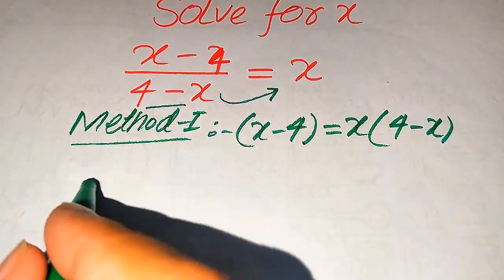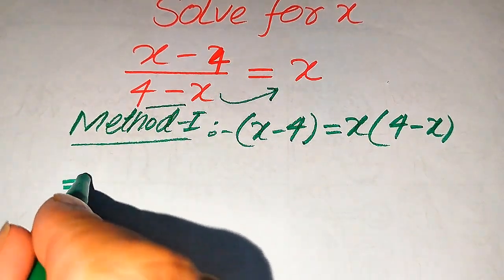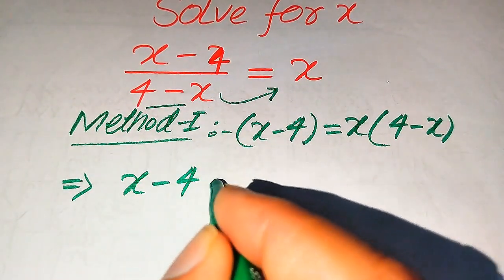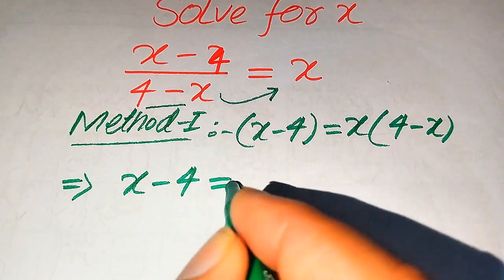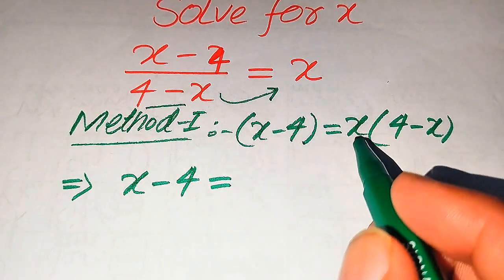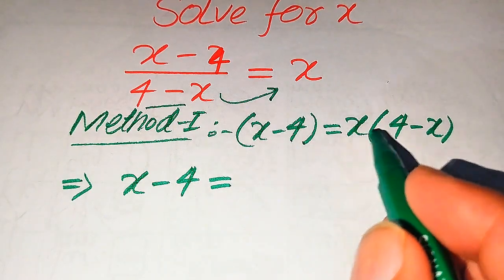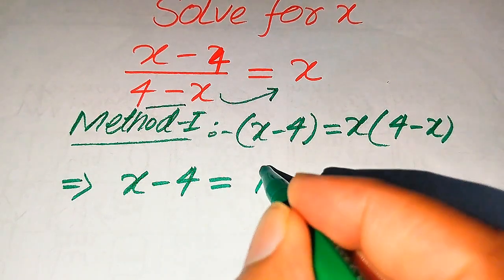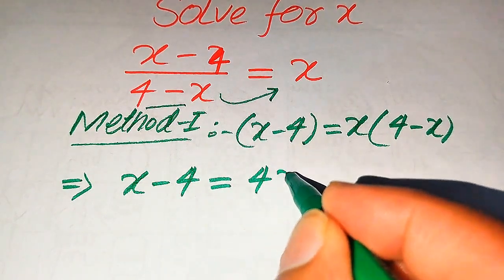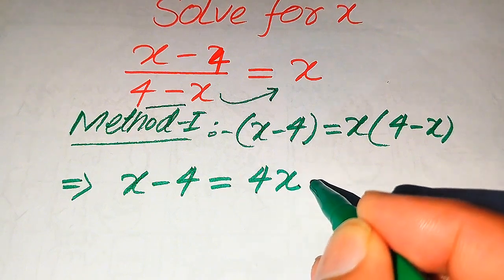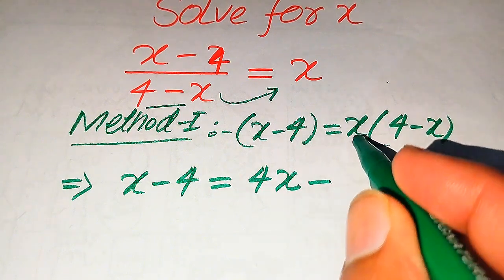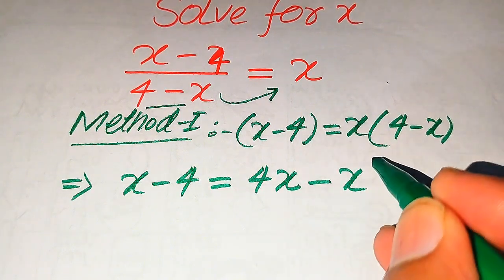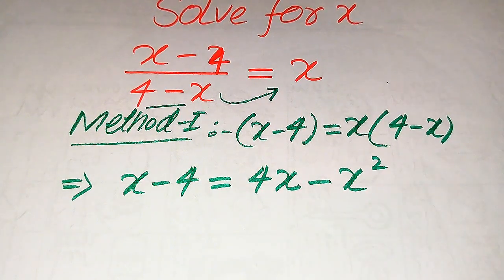In the next step, x minus 4 equals x times (4 minus x). We multiply x across both terms on the right-hand side to get 4x minus x squared.